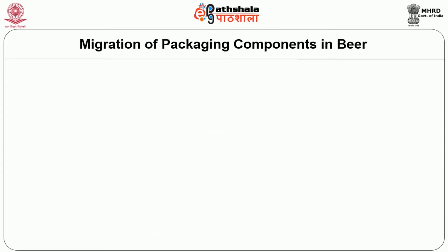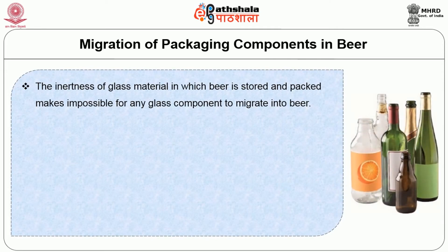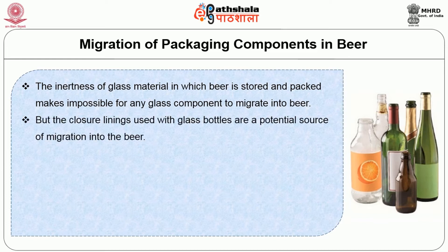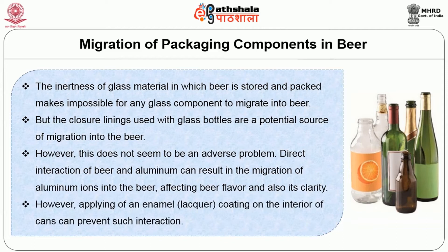Now let us look about the migration of packaging components in beer. The inertness of glass material in which beer is stored and packed makes it impossible for any glass component to migrate into beer. But the closure linings used for the glass bottles are a potential source of migration into the beer; however, this does not seem to be an adverse problem. Direct interaction of beer and aluminium can result in the migration of aluminium ions into the beer, affecting beer flavor and its clarity. However, applying an enamel coating on the interior of the cans can prevent such interaction.